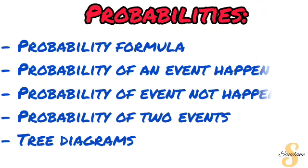The last topic in your paper 2 scope is probability. Just like in paper 1, this is going to be an integrated question — integrated with maps and plans in question 4, and integrated with measurement in question 5. What you should be comfortable with before walking into the exam room is the formula for calculating probability. Most learners are not even aware there is a formula: favorable outcomes over all possible outcomes.